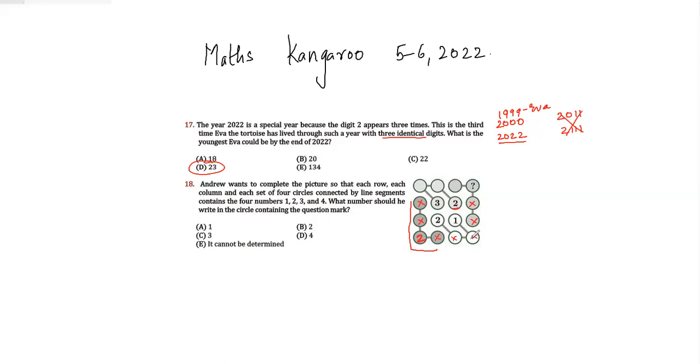If 2 comes here, that means 2 cannot come here, here, here, here, or here. So in this place, 2 is the only digit that will fit in. So at the place of the question mark, only digit 2 will fit in. My answer would be option number B.